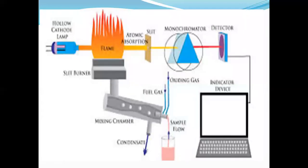This is another instrumental diagram with more detail. Here is the hollow cathode lamp, the flame, and a slit. The monochromator — which may be a prism or grating — is shown, followed by the detector.